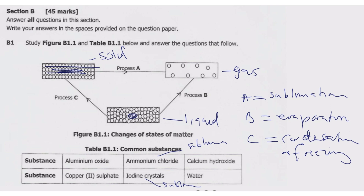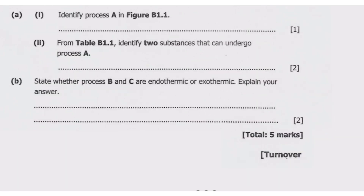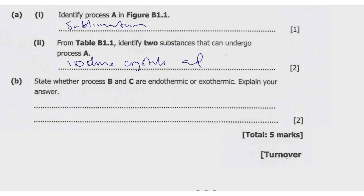So to answer the question: process A is sublimation. From the table, the two substances that undergo process A (sublimation) are iodine crystals and ammonium chloride.